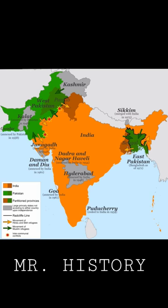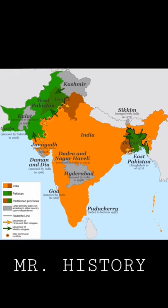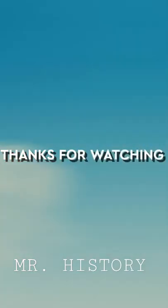the princely states who initially refused to join the dominions. The demarcation line was published on 17th August 1947.